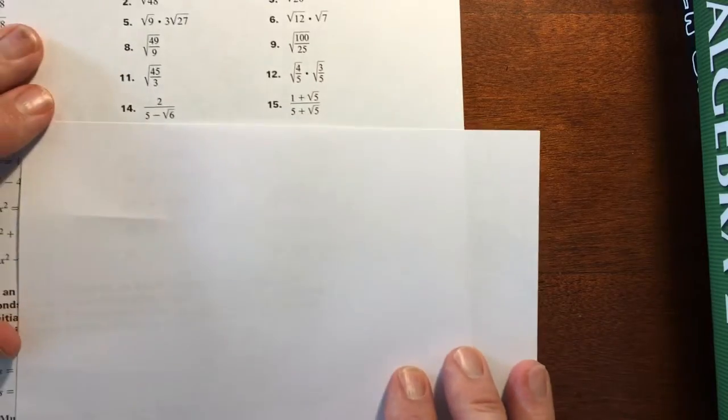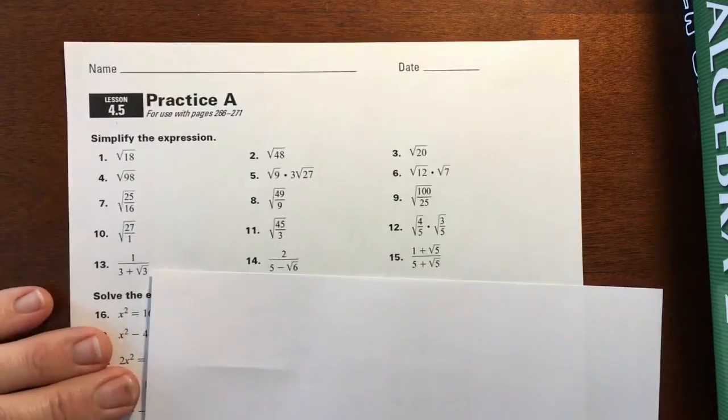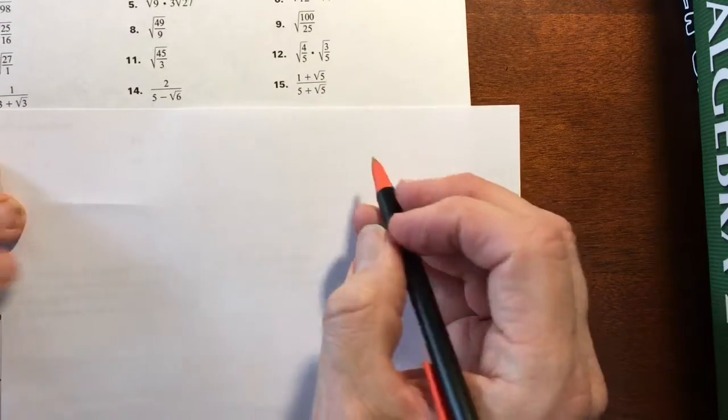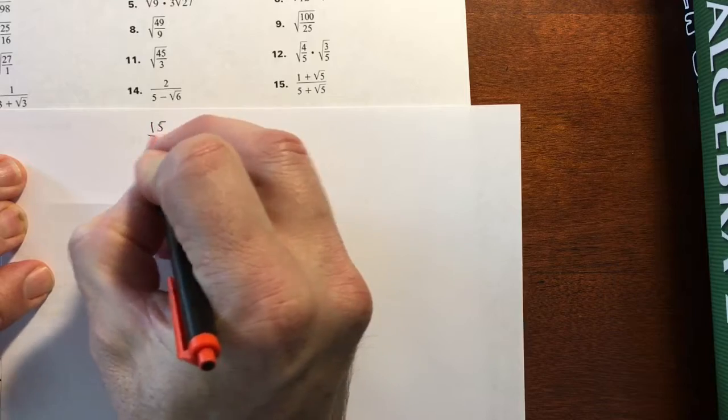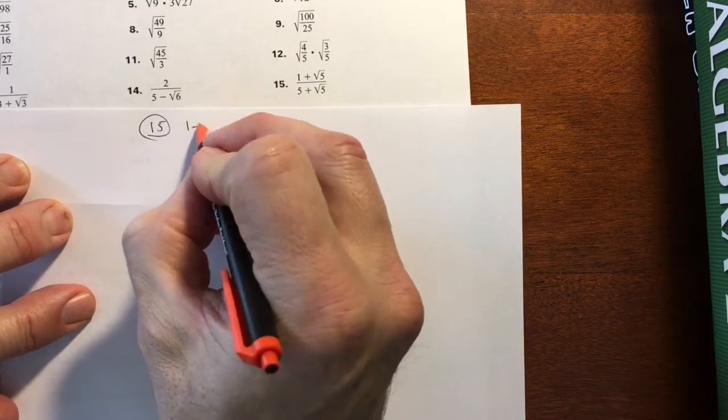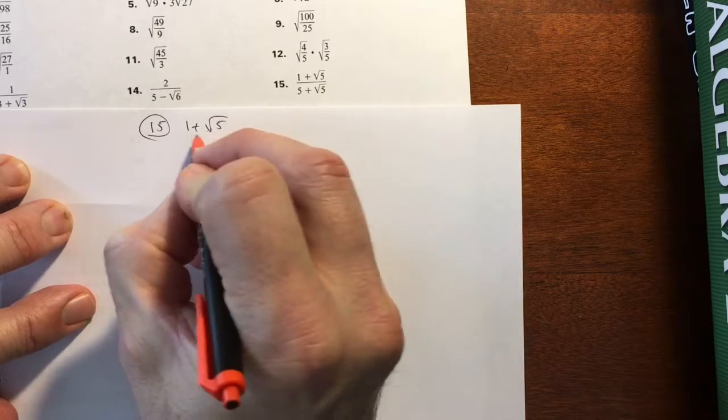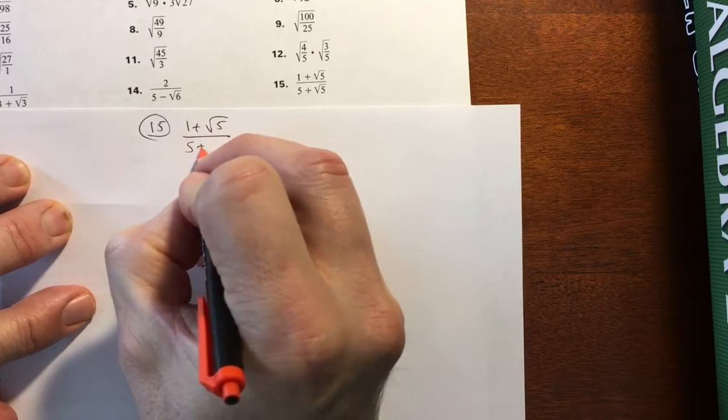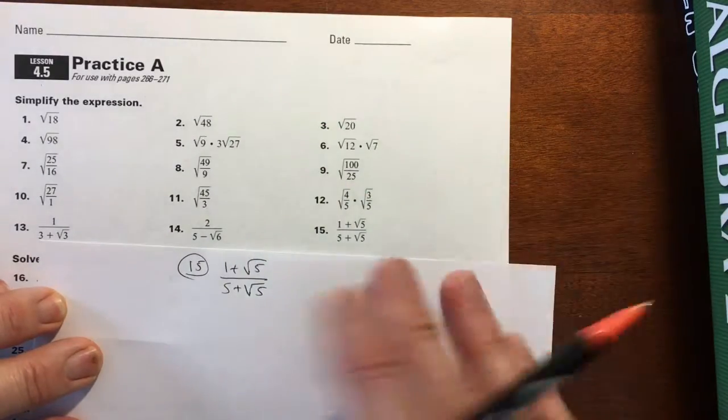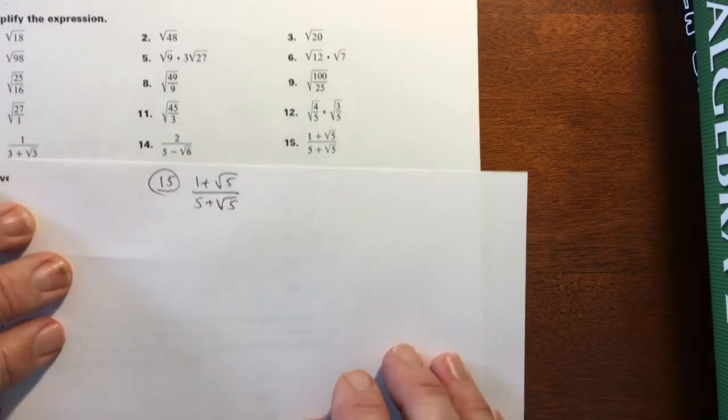Now we're rationalizing. Again, this is 4.5a. Rationalizing the denominator, but it's got a binomial here. So for this one, I'll rewrite it for you first. 1 plus square root of 5 over 5 plus square root of 5. By the way, please don't try to do these on this paper. This is not near enough room. You're going to need some extra paper to do these.